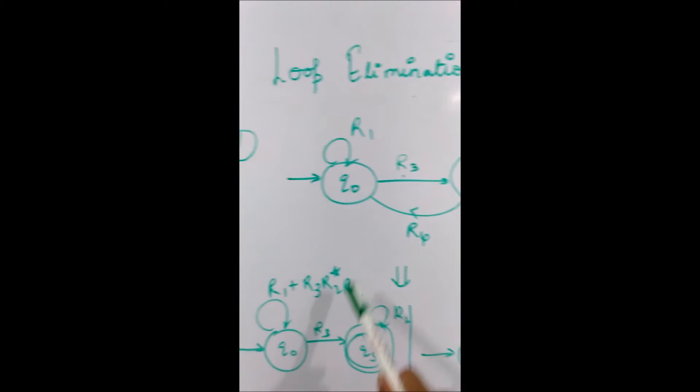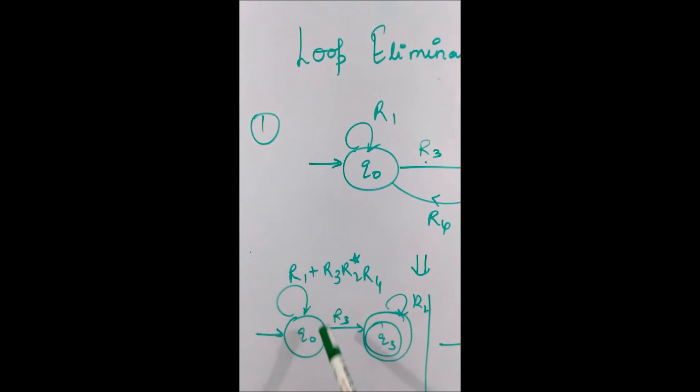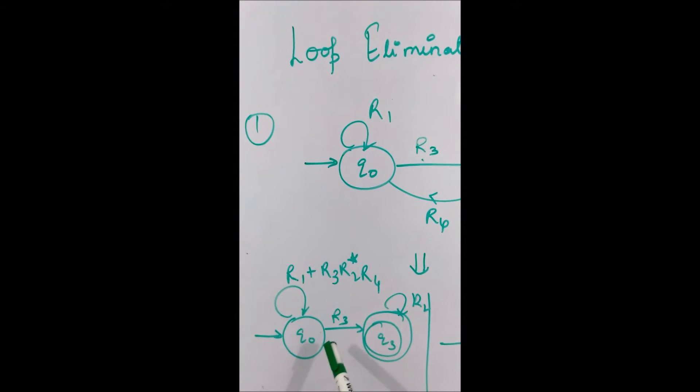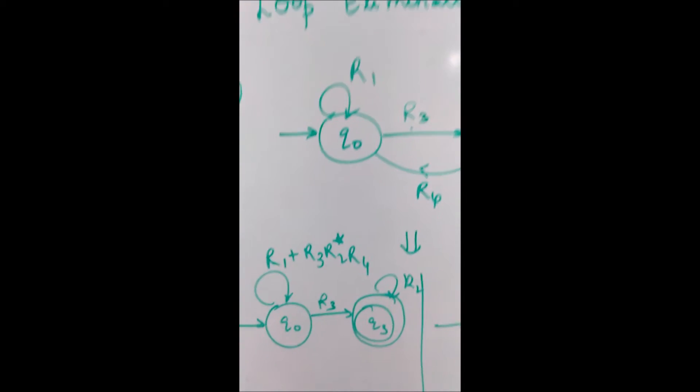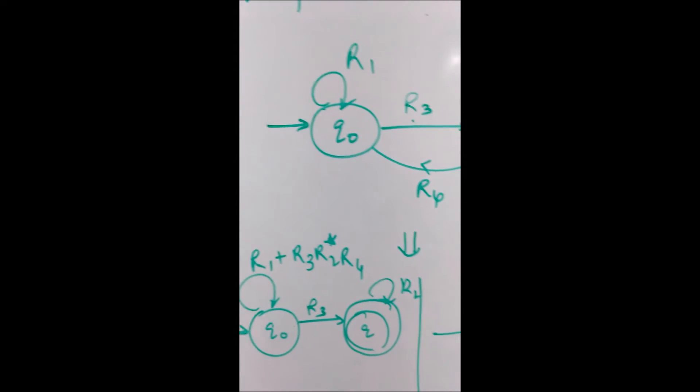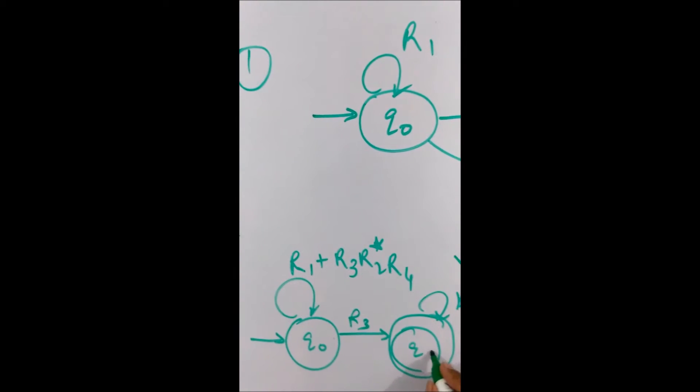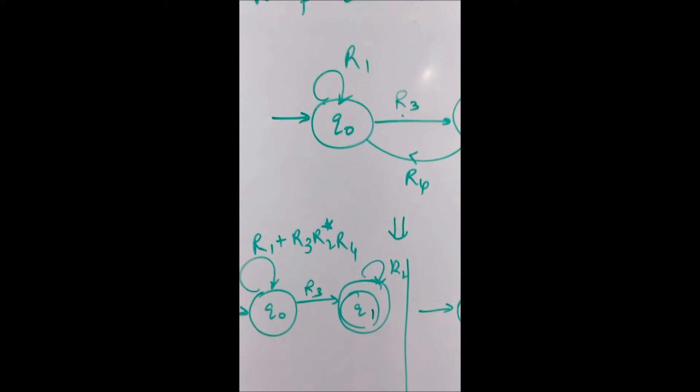The total effect of that loop is transferred to q0 state. And again we have kept the path from q0 to q1 as it is. This can be one way.